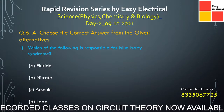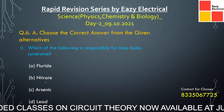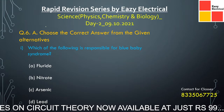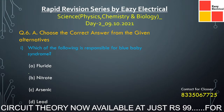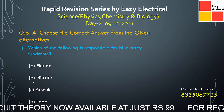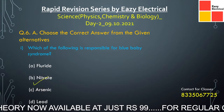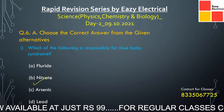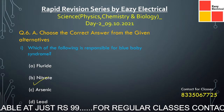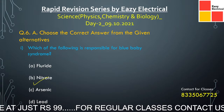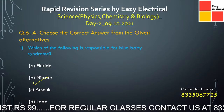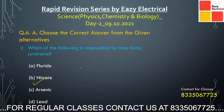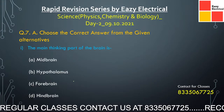Next: which of the following is responsible for blue baby syndrome — fluoride, nitrate, arsenic, or lead? The correct answer is nitrate. Nitrate mixes with hemoglobin and forms oxyhemoglobin, then methemoglobin, which obstructs the carrying of oxygen in the body. Blue baby syndrome is also called methemoglobinemia.